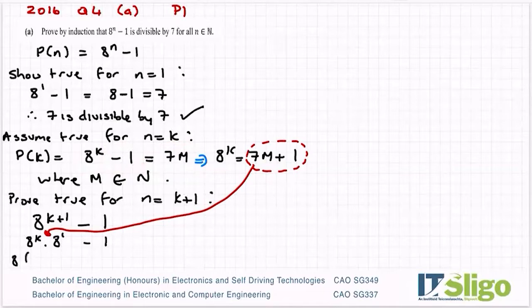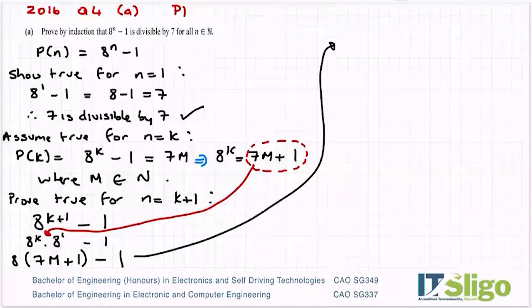So 8 to the power of 1 is 8. I'm going to bring that to the front, but instead of 8 to the power of k, I'm going to put in 7m plus 1 minus 1. And let me bring him up here. So 8 times 7 is 56m. 8 by 1 is 8 and then I have minus 1. So I have 56m plus 7 on that left hand side.